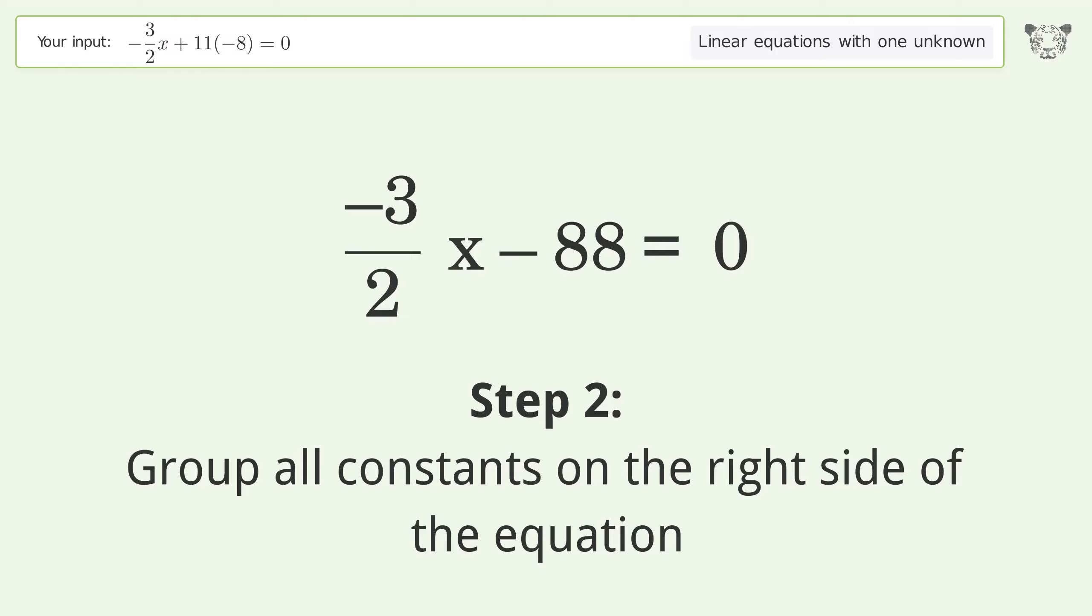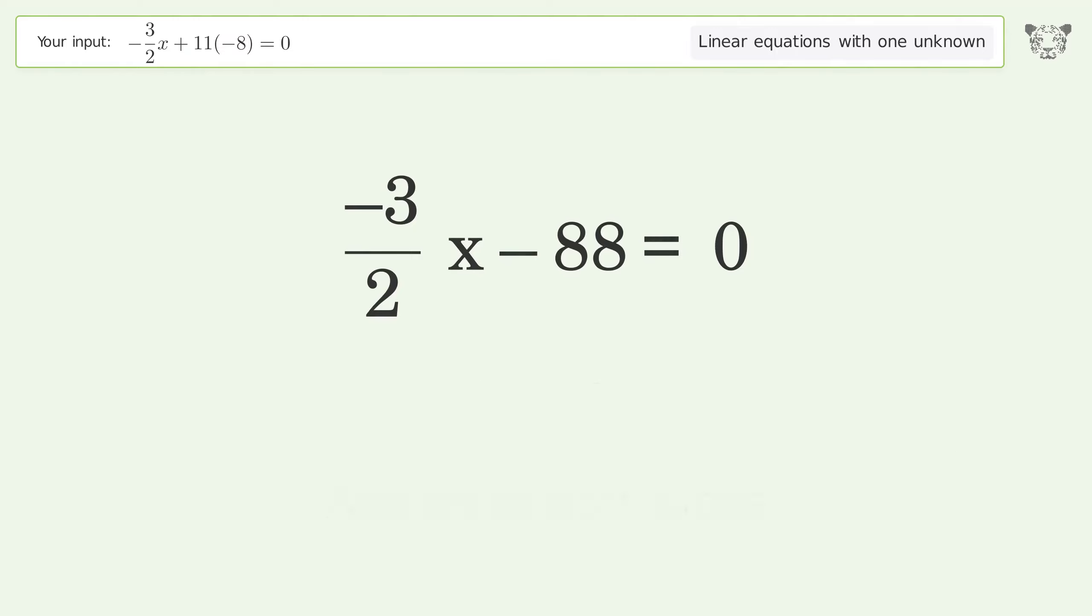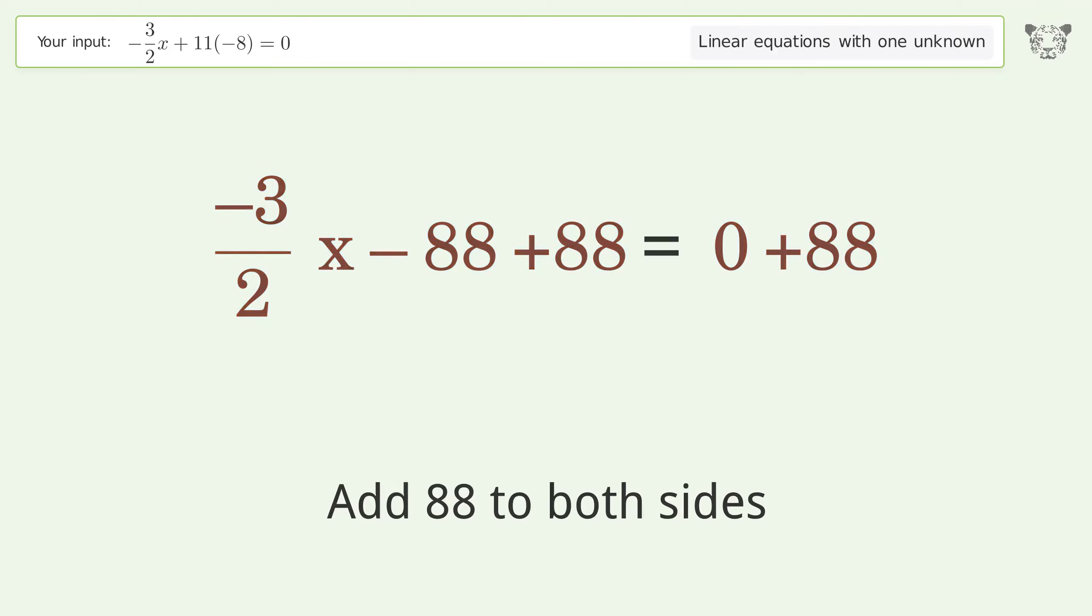Group all constants on the right side of the equation. Add 88 to both sides. Simplify the arithmetic.